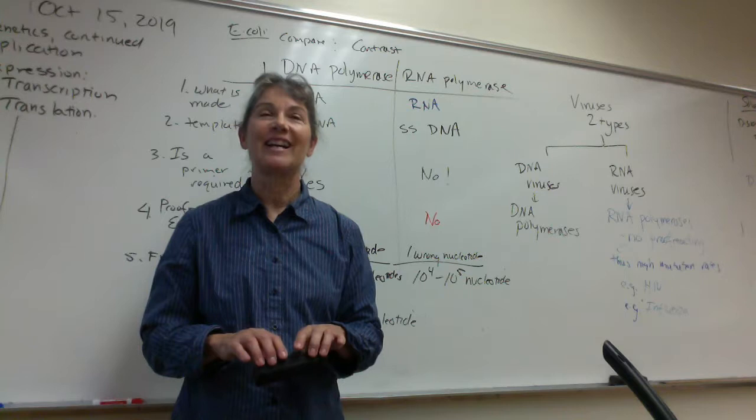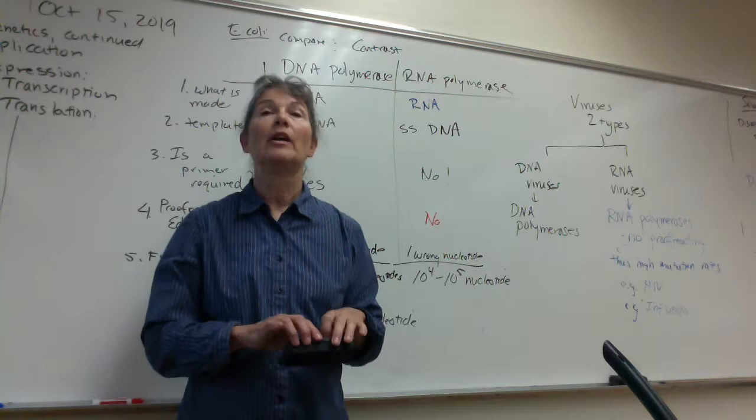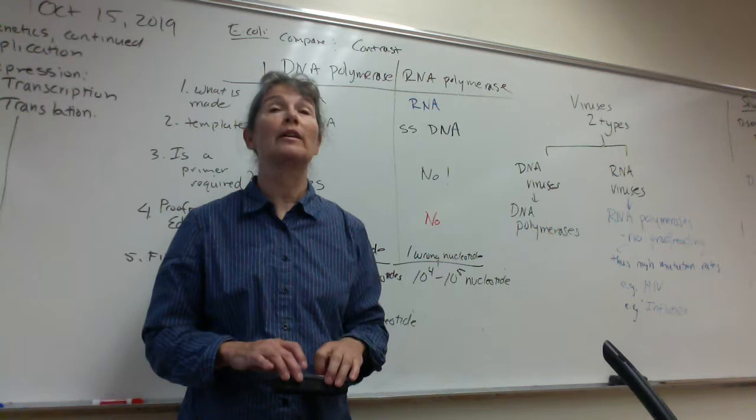Do we have to know the charged precursors? Just know that the cell needs nucleoside triphosphates to make DNA or RNA. You don't need to know adenosine triphosphate specifically — just know cells need nucleoside triphosphates to make DNA or RNA.